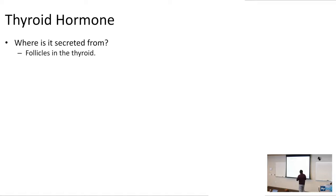Let's go through thyroid hormone. Where is thyroid hormone secreted from? Thyroid hormone is secreted from the follicles in the thyroid.